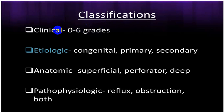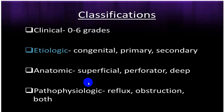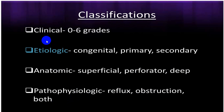There is a CEAP classification — Clinical, Etiological, Anatomical, and Pathological. Clinical classification goes from C0 to C6 depending on severity. Etiological is congenital, primary, or secondary. Anatomical covers superficial vein, perforator vein, and deep vein involvement. Pathological classification distinguishes reflux, obstruction, or a combination of both — reflux mainly due to chronic venous insufficiency, obstruction due to deep vein thrombosis.